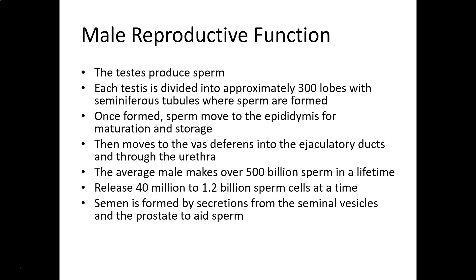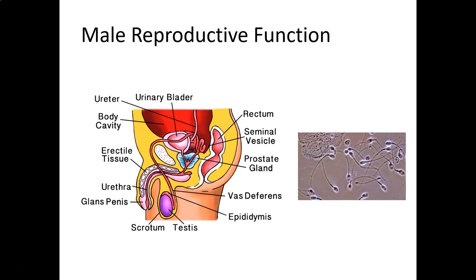The average male makes somewhere around 500 billion sperm in one lifetime and can release between 40 million and over a billion sperm at a time. What they release is actually semen, formed by secretions from a number of different glands that help aid the sperm and make it more viable. The take-home lesson: lots and lots of sperm.